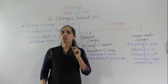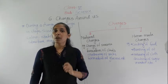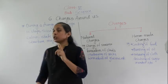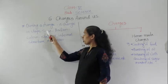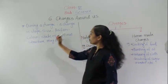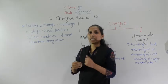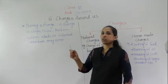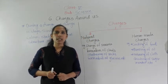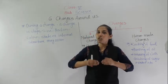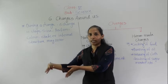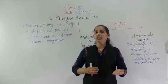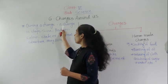So what exactly happens during a change? During a change, which things are getting changed? A change in shape, size, and position occurs. For example, if I am standing here and I walk and change my place, I have changed my position. So sometimes I was standing here, now I am standing somewhere else — I have changed my position. That is a similar type of change.